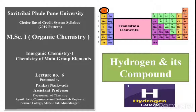Hello everyone, friends. In the previous lecture we discussed the molecular hydride, saline hydride, and metallic hydride. The molecular hydride is classified into electron-rich hydride, electron-deficient hydride, and electron-precise hydride. Up to this we covered in the previous lecture. Now in today's lecture we will start the remaining part of hydrogen and its compounds.